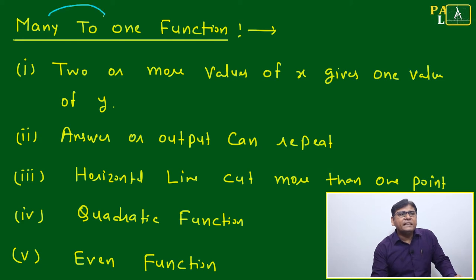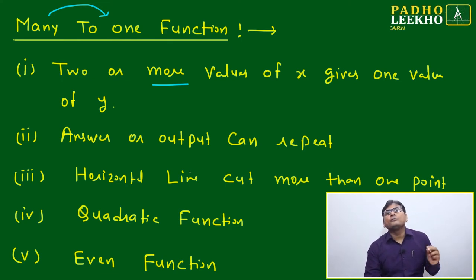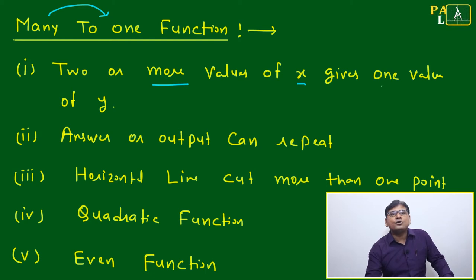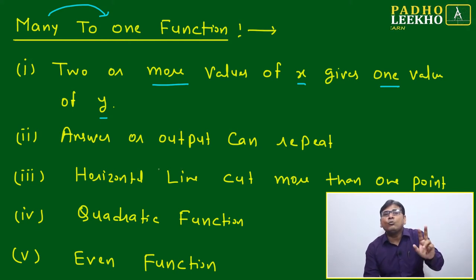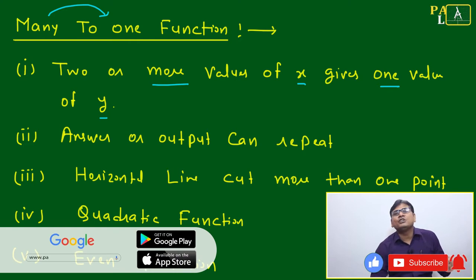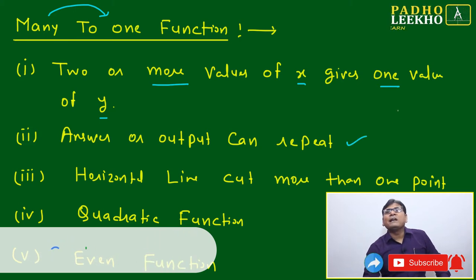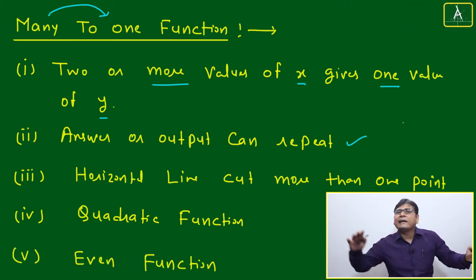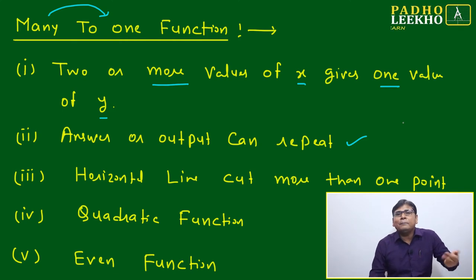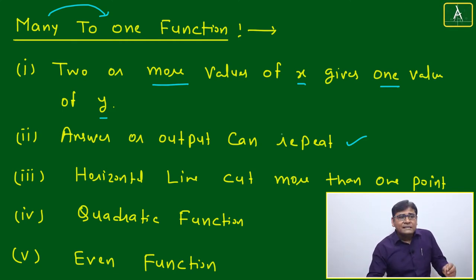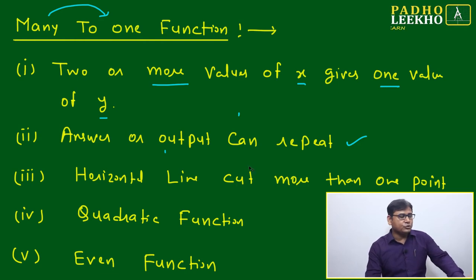The name 'many-to-one' itself tells us: two or more values of x (the input) give exactly one value of y (the output). Two or more values of the independent variable give the same output value. So the answer or output can repeat — for example, element A and element B both give output 2. That is many-to-one.